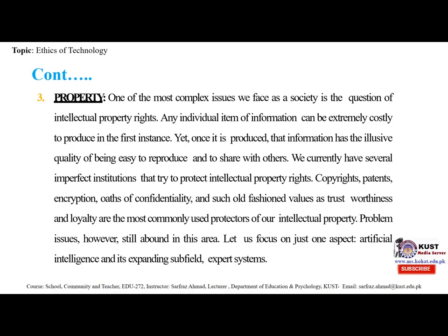Next comes property. Property is any item that a person or a business has legal title over. Property can be tangible items such as houses, cars or appliances, or it can refer to intangible items that carry the promise of future worth such as stock and bond certificates. In economics and political economy, there are three broad forms of property: private property, public property and collective property.